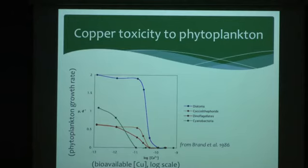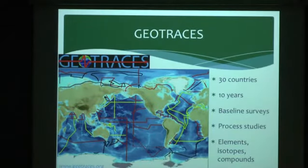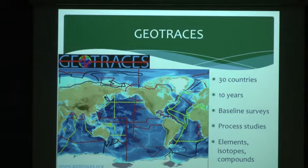GEOTRACES is a global ocean survey. We have a very poor understanding of trace elements in the ocean compared to most other elements — you can find global maps of nitrogen, phosphorus, even silica, and we've done many global surveys for temperature and salinity. This is really difficult to do for trace elements. We have challenges sampling the water column efficiently and then measuring these samples; it's not simple.